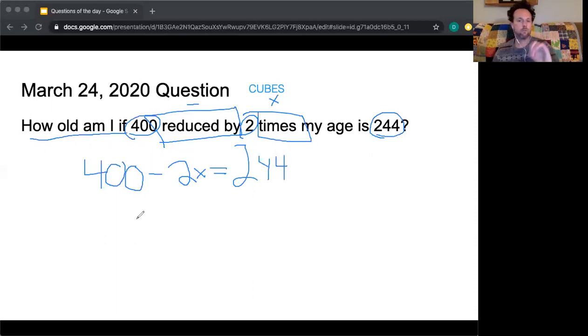So 400 minus 2x equals 244. Does this look right? It should because it is. So I have 244 equals 400 minus 2x. I can do this a couple different ways, but since my variable is already on the left side of my equation, my right side over here, since my variable x is already on the left side, I'm going to move all my numbers over to the right side. So I'm starting with a positive 400 over here. I'm going to subtract 400 from both sides.